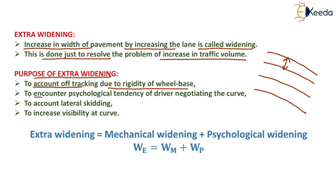The second purpose is to account for the psychological tendency of the driver negotiating the curve. Generally, a driver tries to move the vehicle as close as possible to the outer edge of the pavement. To increase the safety of the driver and the vehicle, we provide extra widening. The third purpose is to account for lateral skidding, and extra widening is also provided to increase visibility at the curve.